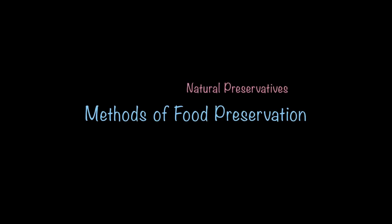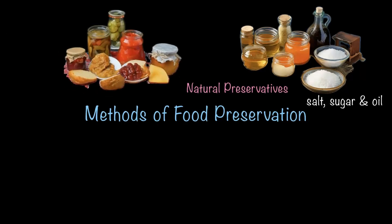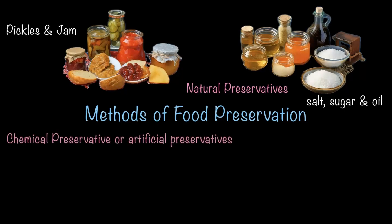There is a similar concept called food preservation, where food is prevented from spoiling due to internal factors. Let's look at some methods of food preservation. First, we have natural preservatives, which are naturally available materials like salt, sugar, and oil. These are commonly used as preservatives in things like pickles and jams, which we use in our daily life in so many types of food.